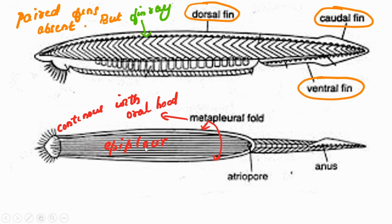The epipleur is the rigid ventral surface of Amphioxus. Along the ventral surface we can see many ridges. On both sides of the epipleur, the margins are produced into two hollow folds called the metapleural folds. These metapleural folds pass towards the anterior end and join continuously with the oral hood.